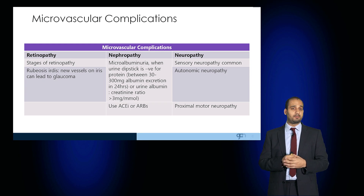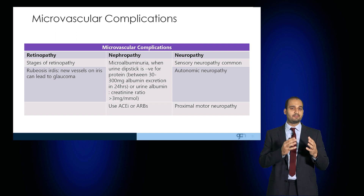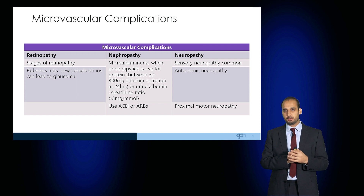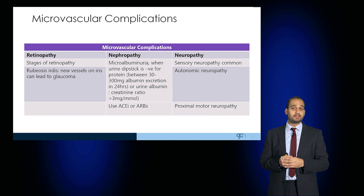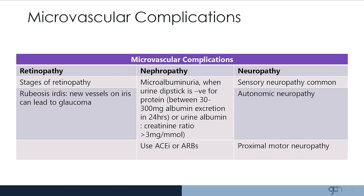The microvascular complications are retinopathy, nephropathy and neuropathy. Neuropathy is where the patient develops altered sensation in the peripheries, which may result in a glove and stocking distribution. If diabetes affects the autonomic nerves, this results in autonomic neuropathy, which may manifest as the patient feeling lightheaded on standing due to orthostatic hypotension.